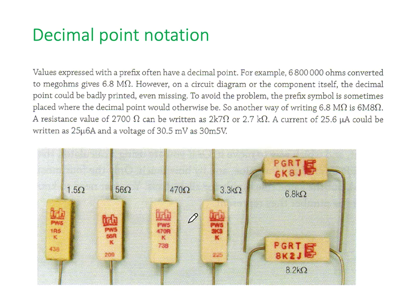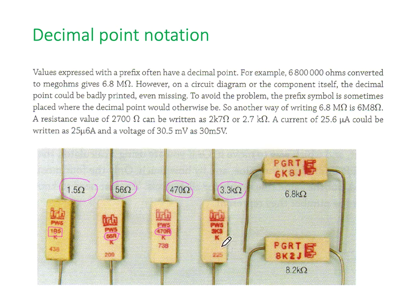So you can see here, this is a 1.5 ohm, but on the actual resistor they've written 1R5. So the R becomes the decimal point. Here we've got 56 ohms, so they've simply written 56R. Similarly here, 470 ohms written as 470R. This one here, 3.3k. So again, the k represents the decimal point. Another one here at 6.8k. And finally, the k here representing a decimal point at 8.2k.